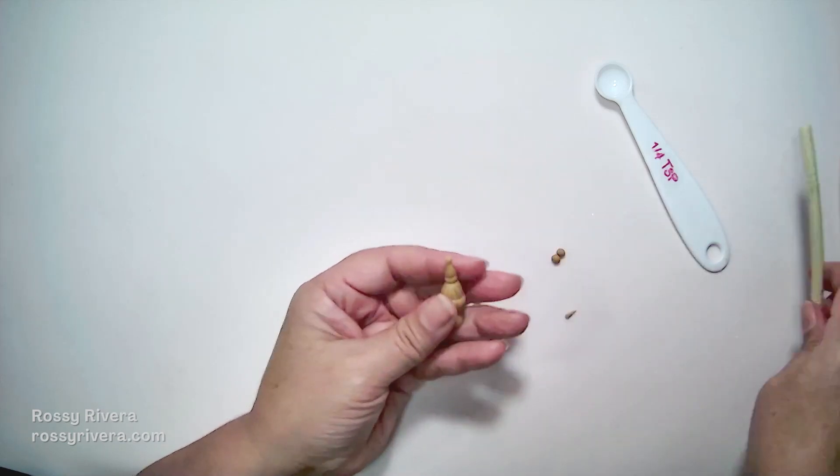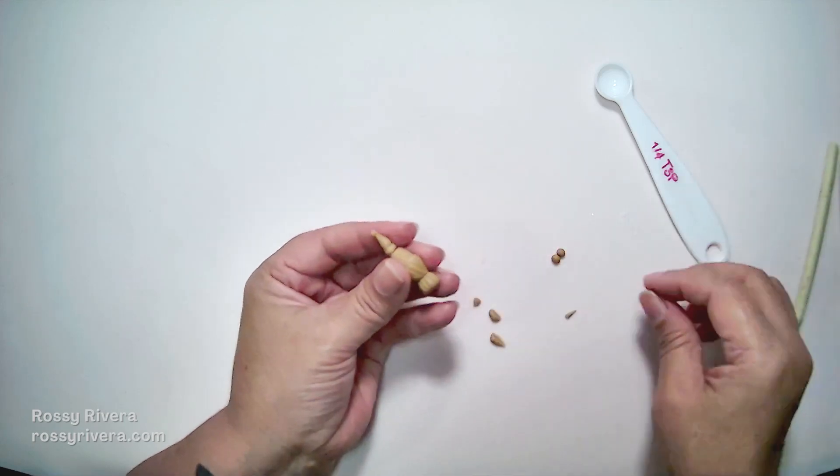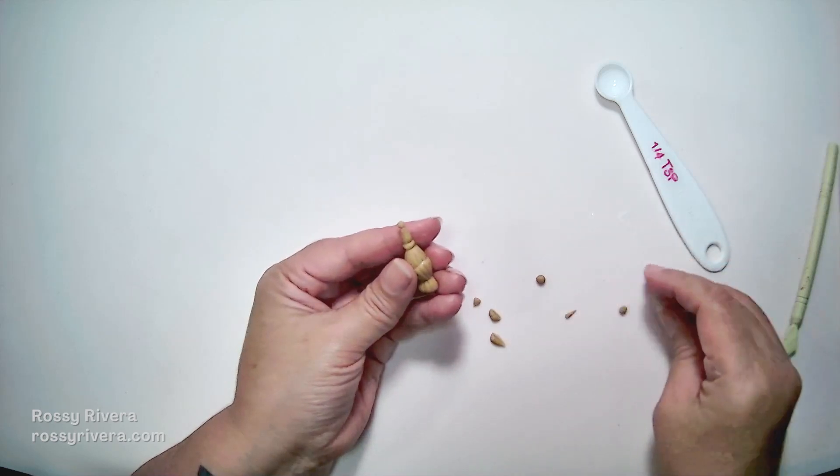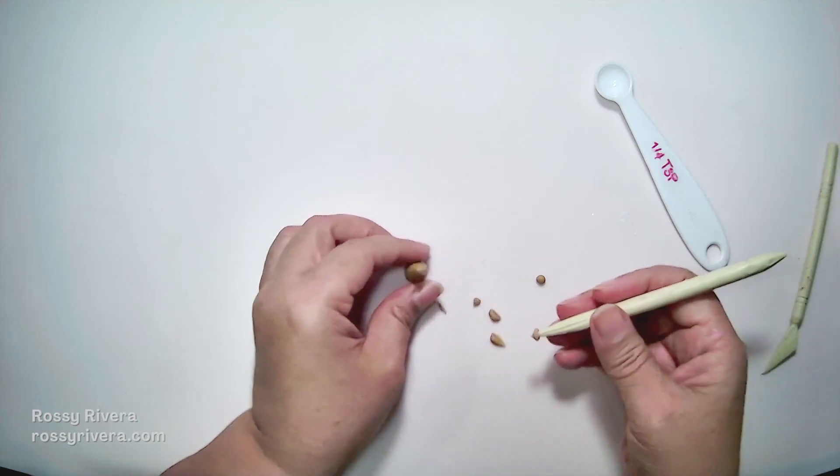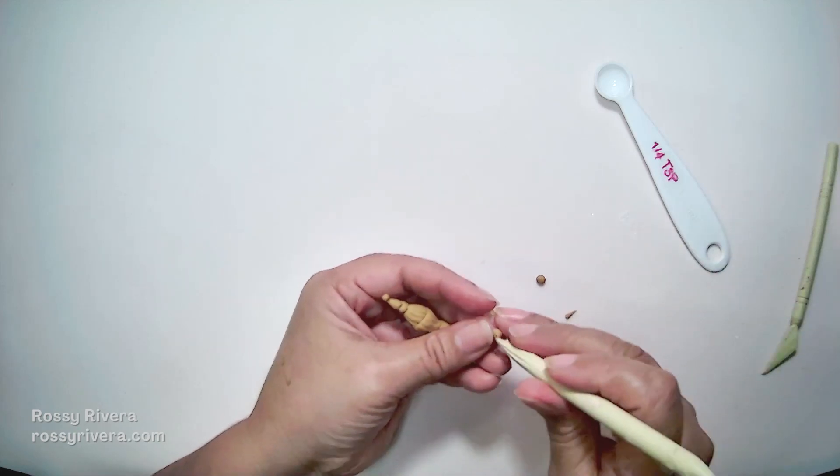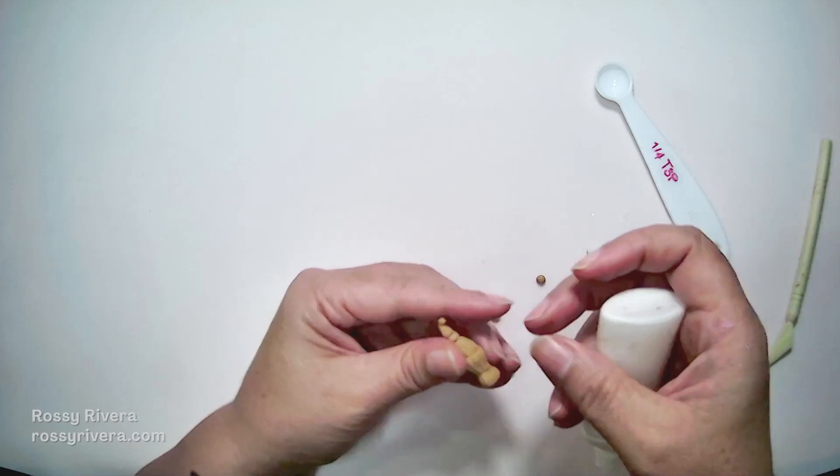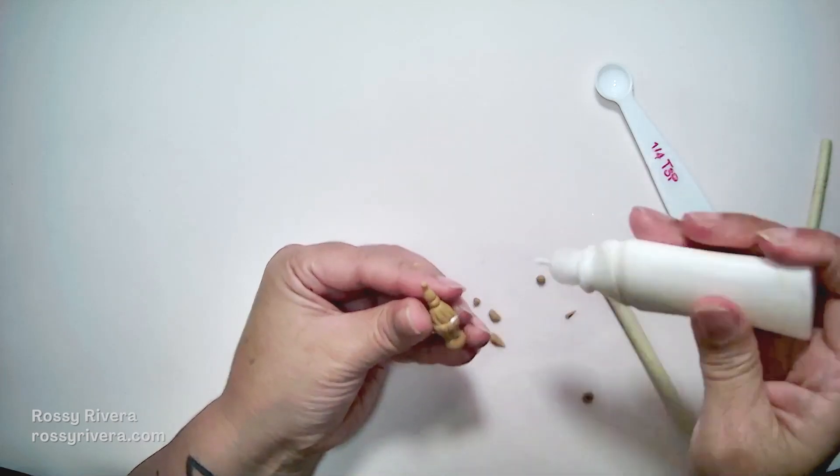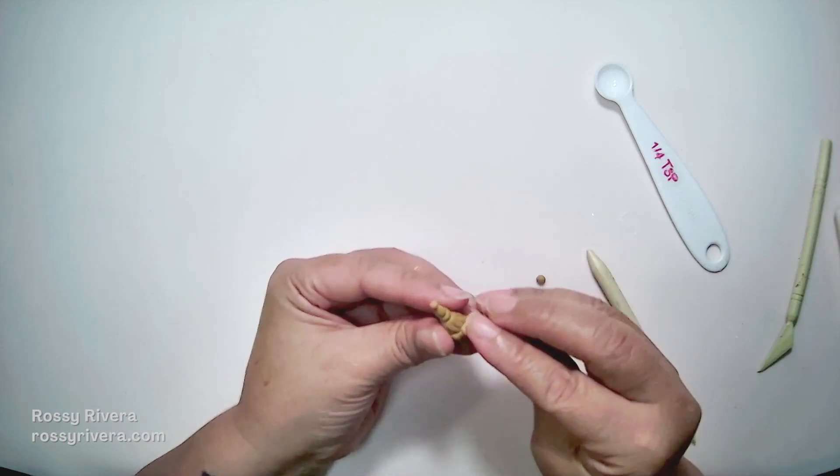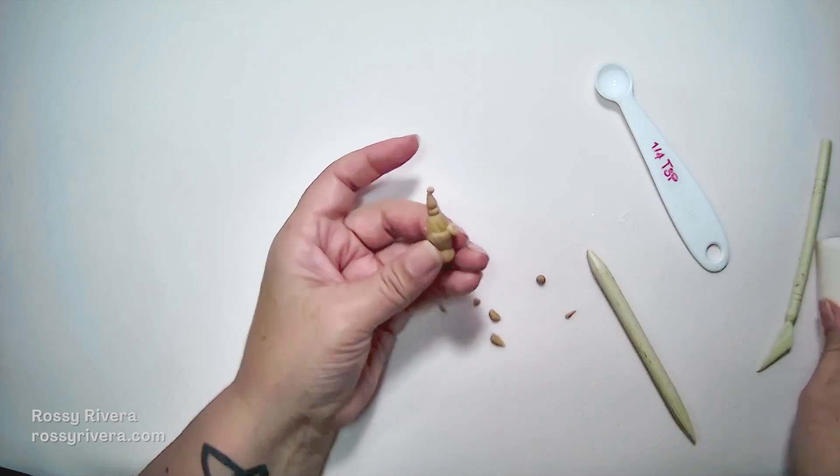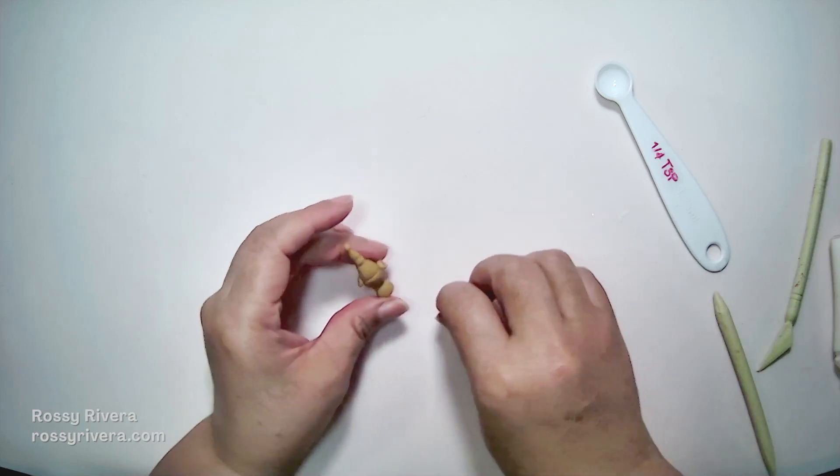Now with the ones we cut that we cut aside earlier, these ones right here, I'm going to knead them. And on the side, we're going to make them a little bit flat. Then I'm adding a small hole. And they will be sort of like the handles. And then I'm just going to attach it to the sides here. And the other one on the other side. Once we have that done, it's going to look like this.